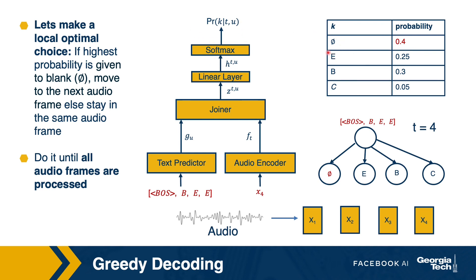Since the text embedding has changed, we get a different probability distribution. Let's say the highest probability is now given to blank. Since blank was chosen, the next decoding step should move to the next audio frame, but we only have 4 audio frames, so there is no next audio frame — we are done with the decoding. Rather than continuing to generate infinitely many candidates from a current time frame, we are able to finish decoding by assuming that at every distinct text history and audio frame, we make a local choice, taking the highest probability option as our optimal choice.